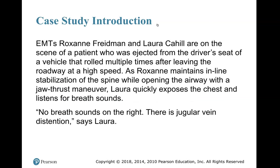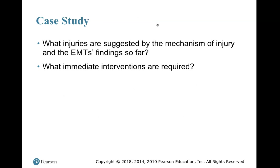Our case study introduction: EMTs Roxanne Friedman and Laura Cahill are on scene with a patient who was ejected from the driver's seat of a vehicle that rolled multiple times after leaving the roadway at high speed. As Roxanne maintains inline stabilization of the spine while opening the airway with the jaw thrust maneuver, Laura quickly exposed the chest and listened for breath sounds. 'No breath sounds on the right — there is jugular vein distension,' says Laura. What injuries are suggested by the mechanism of injury and the EMT's findings? What immediate interventions are required?